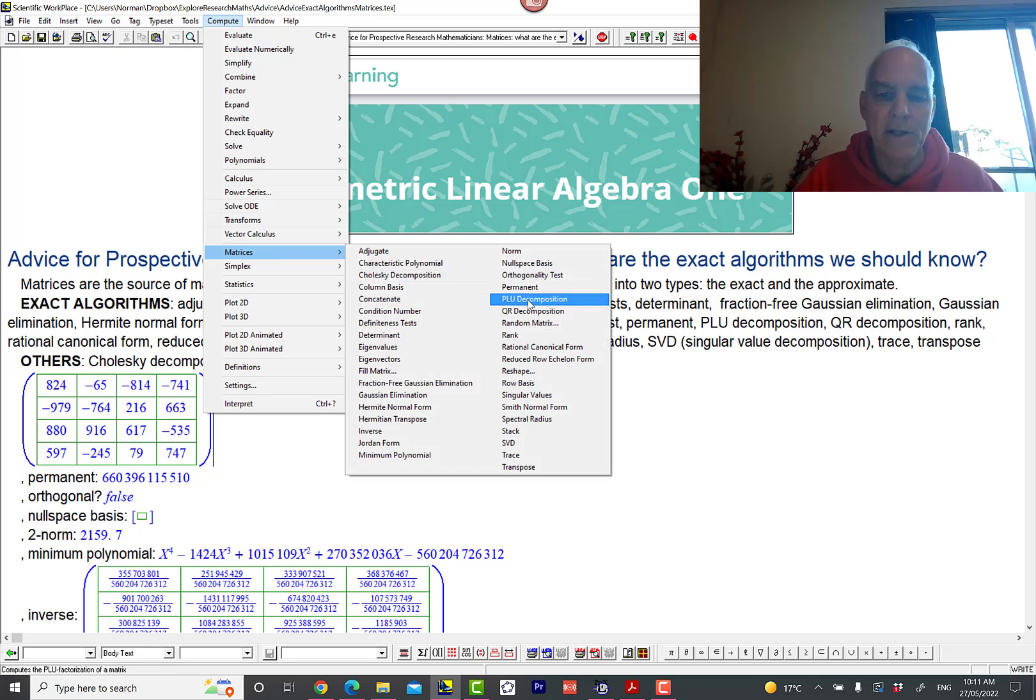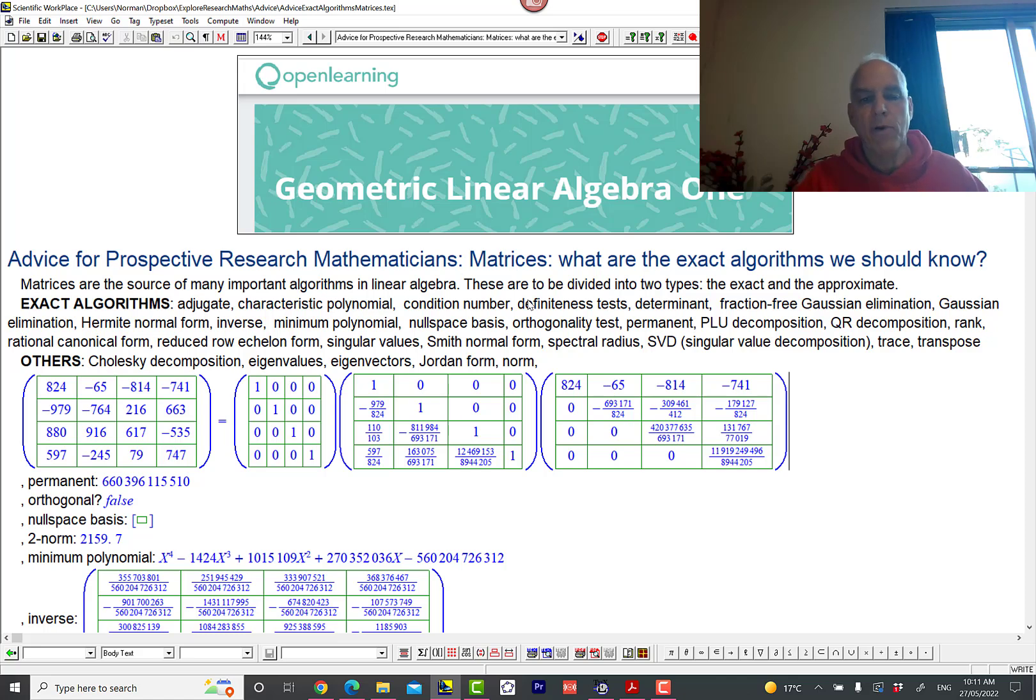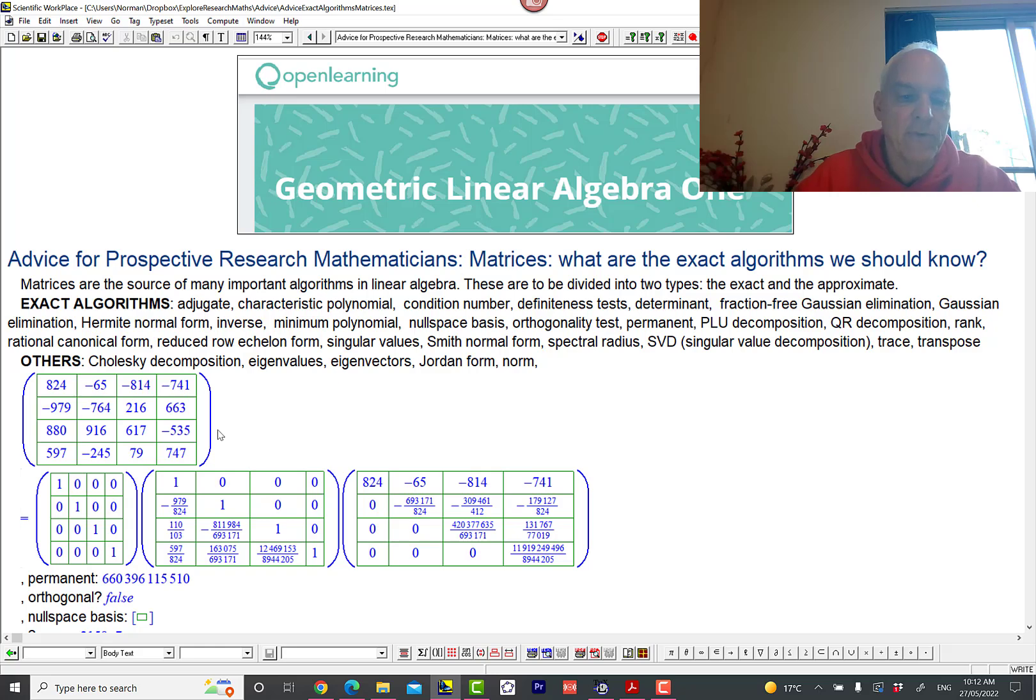We come to the PLU decomposition which is quite important. This is again a product of a permutation matrix—that's the P—and a lower triangular matrix—that's the L—and an upper triangular matrix—that's the U. So PLU decomposition. You can see this is exact, and it's somehow pretty closely related to Gaussian elimination, sort of keeping track of what happens with Gaussian elimination. Most of the time this permutation matrix is the identity—that's sort of the generic story—but for special cases you can have other permutation matrices appearing here. But in any case, that's still an exact calculation.